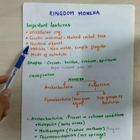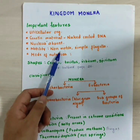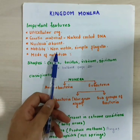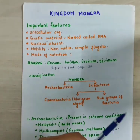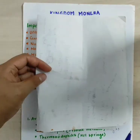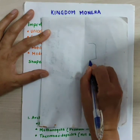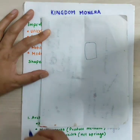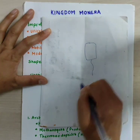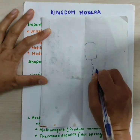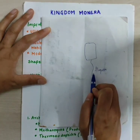Flagella is a hair-like structure, an outgrowth from the cell. For example, in bacteria, this hair-like structure is called flagella, and it is used for motility.